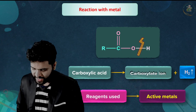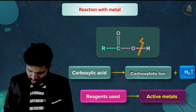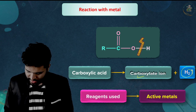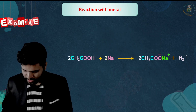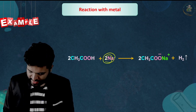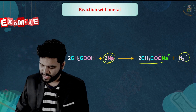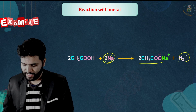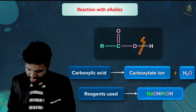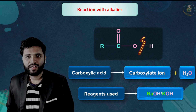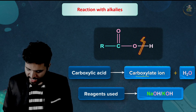Reaction with metals: carboxylic acid reacts with active metals. The active metal reacts with carboxylic acid, liberating hydrogen gas (H2) and forming a salt of carboxylic acid. For example, CH3COOH reacts with an active metal to give CH3COO⁻ (carboxylate salt) and H2 gas.